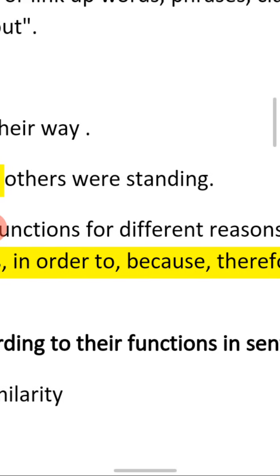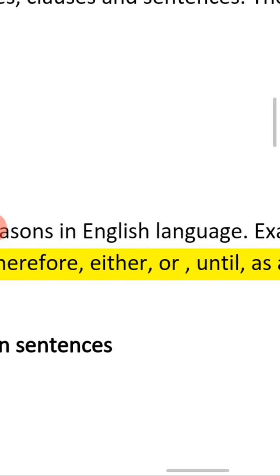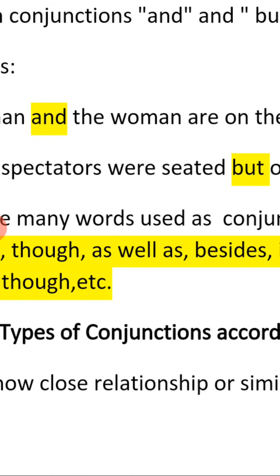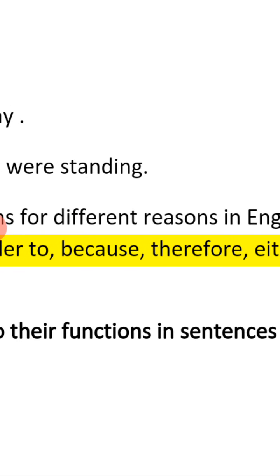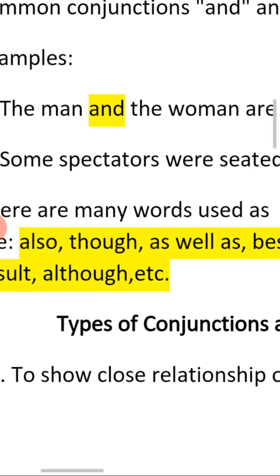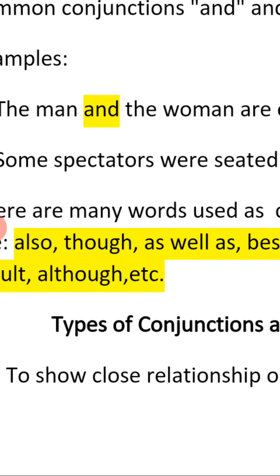There are many words used as conjunctions for different reasons in the English language. For example, we have words like also, though, as well as, besides, in order to, because, therefore, either...or, until, as a result, although — to mention but a few. We use these conjunctions within sentences to join two phrases, two clauses, or two words together, and also in essay writings and compositions as paragraph linkers.